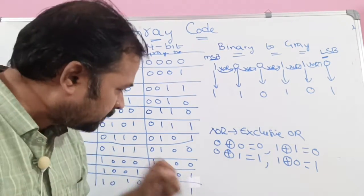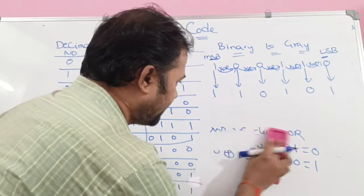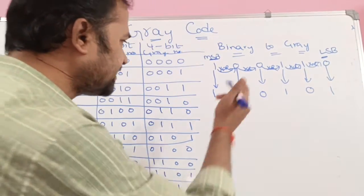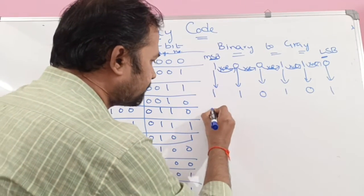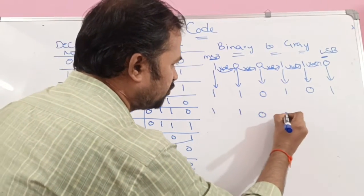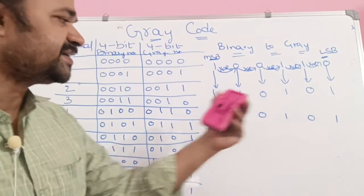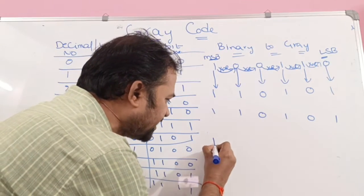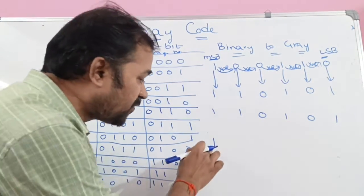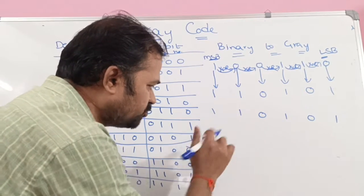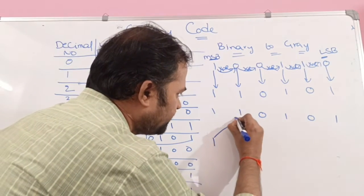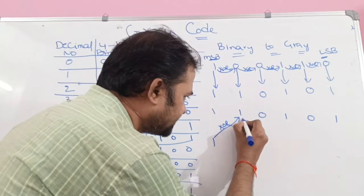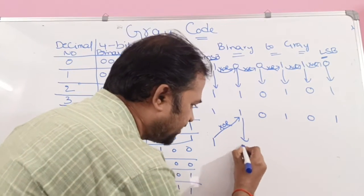Now let us convert gray code into the binary code — vice versa. Let the gray code be this number: 101101. So let us convert this gray code into the binary code. We need to keep the most significant bit as it is. Next we perform XOR operation on these 2 bits: 1 XOR 1 means 0, so we write 0 here.